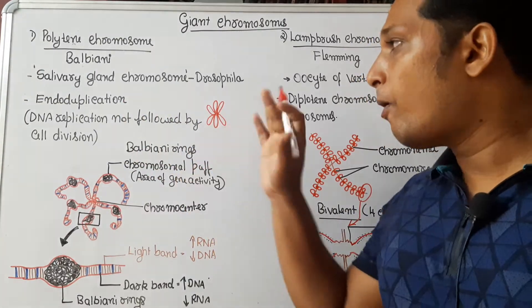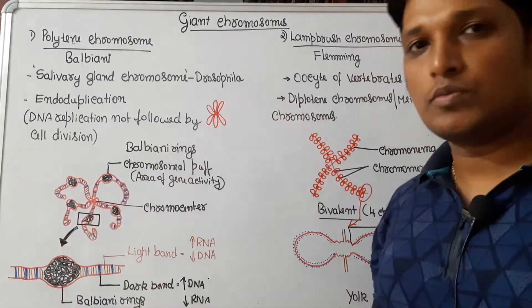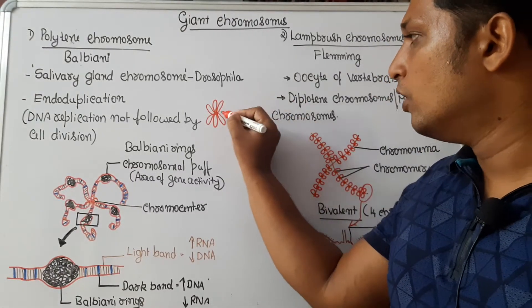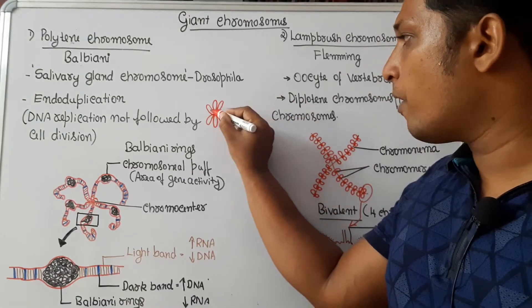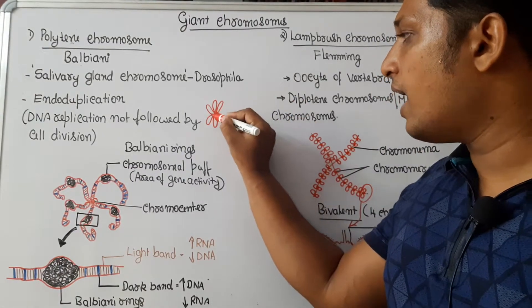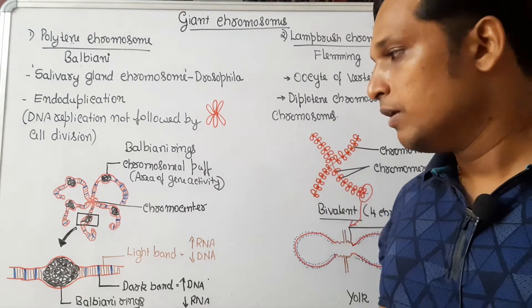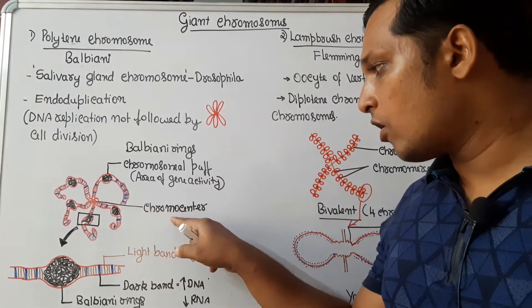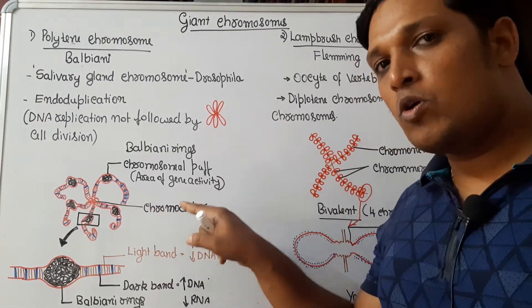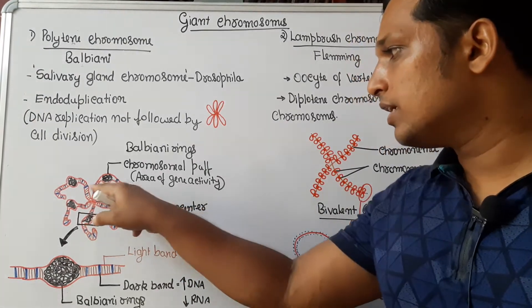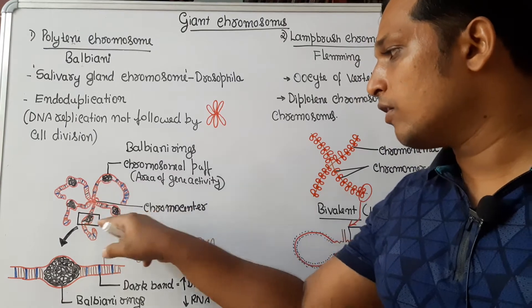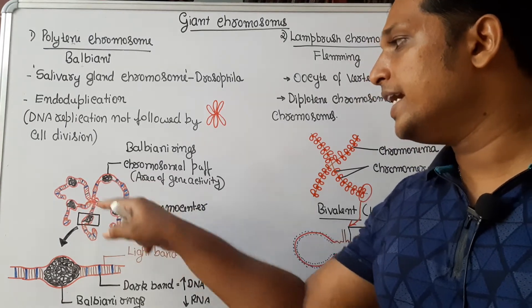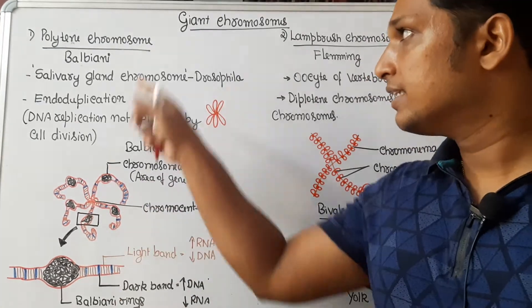That is how polytene chromosomes are formed. Polytene chromosome refers to a structure where many arms are attached to a common point. That common point is called the chromocenter. To the chromocenter, as you can observe in the diagram, five radiating arms are attached.